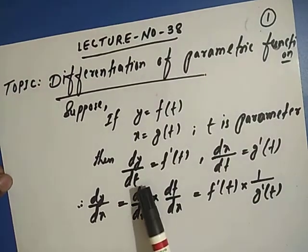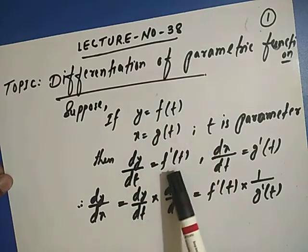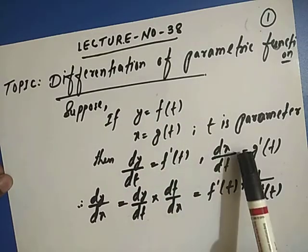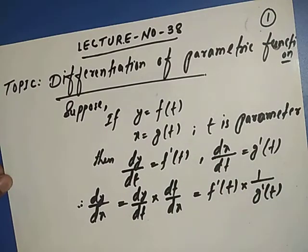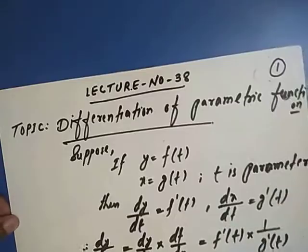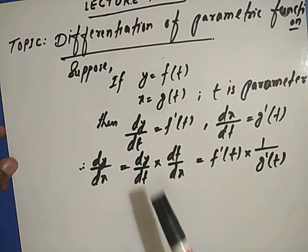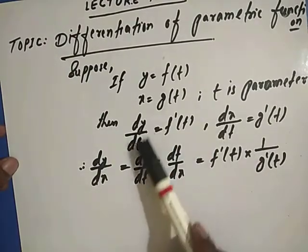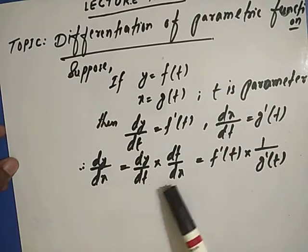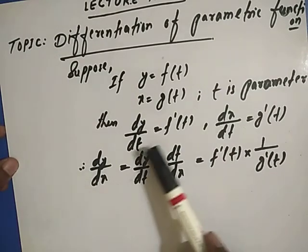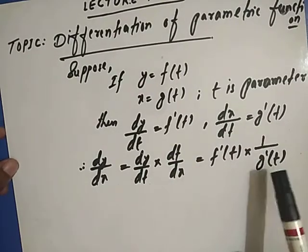We first differentiate y with respect to t: dy/dt equals f'(t). Then differentiate x with respect to t: dx/dt equals g'(t). Now to find dy/dx, we multiply these: dy/dx equals dy/dt times dt/dx. So dy/dt is f'(t) and dt/dx is 1 over dx/dt, which equals f'(t) over g'(t).